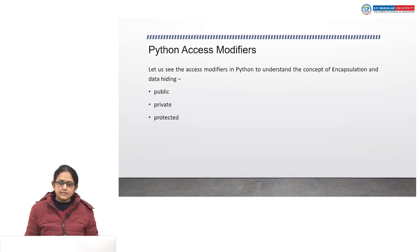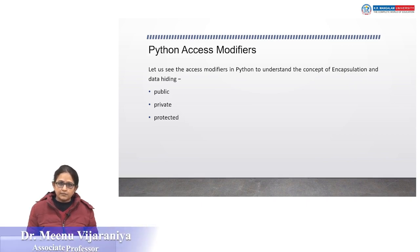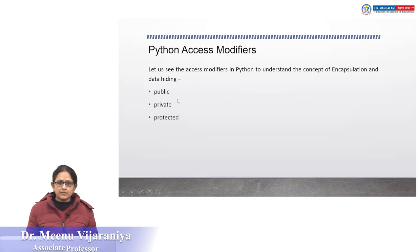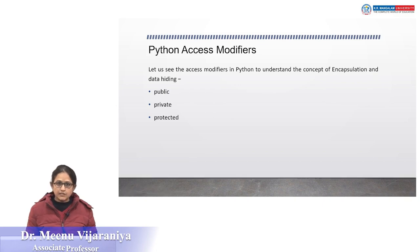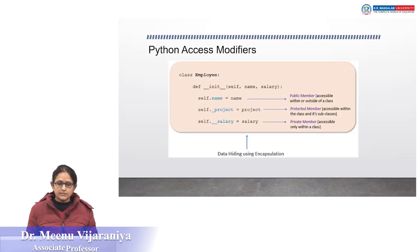Now we will see access modifiers in Python. With the help of access modifiers we can implement encapsulation and information hiding in Python. We have different types of access modifiers: public, private, and protected. We will see each of them one by one in detail.